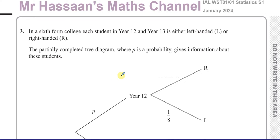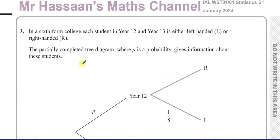Here we have a question about probability. It says in a sixth form college, each student in year 12 and year 13 is either left-handed or right-handed. The partially completed tree diagram, where P is a probability, gives information about the students.